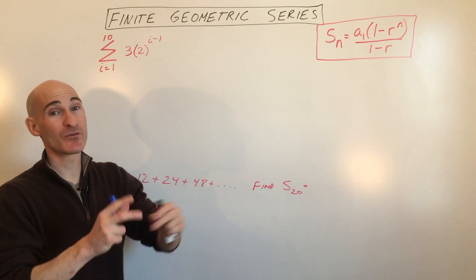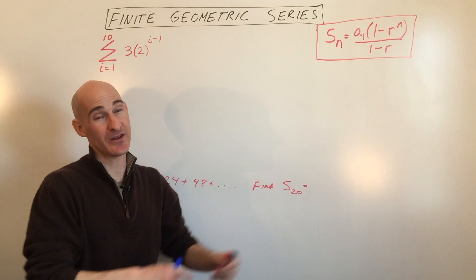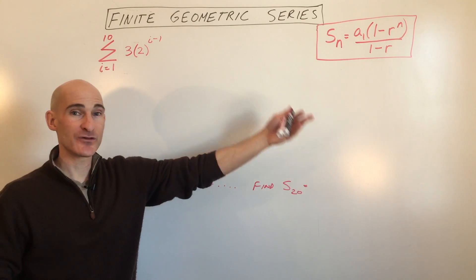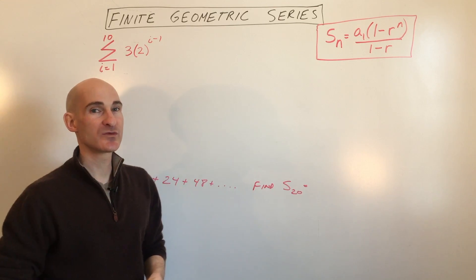Finite just means it's a fixed number of terms as opposed to infinite, going on forever and ever. So you might just be finding the sum of the first 10 terms, 20 terms, 30 terms, like that.